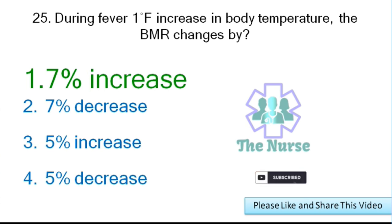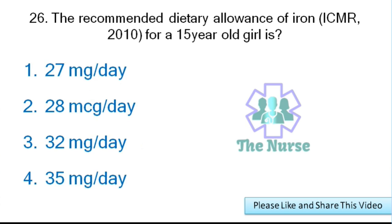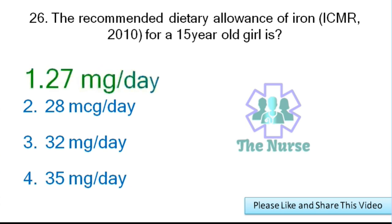Next question: The recommended dietary allowance of iron according to ICMR 2010 for a 15-year-old girl is which of the following? Options: 27 mg per day, 28 mcg per day, 32 mg per day, or 35 mg per day. Correct answer: 27 mg per day.